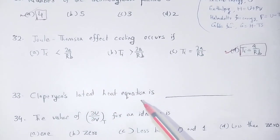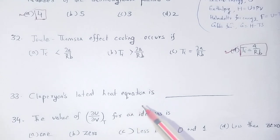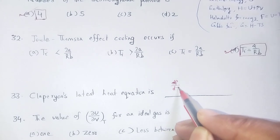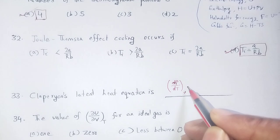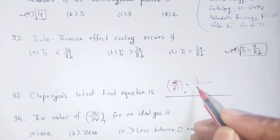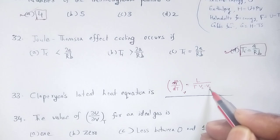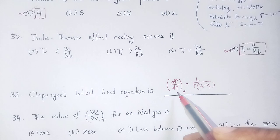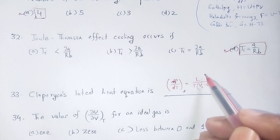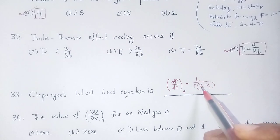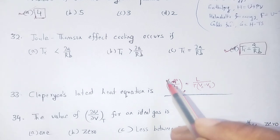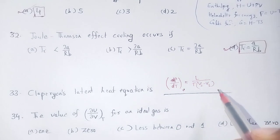Clausius-Clapeyron latent heat equation: dP/dT at constant volume is equal to L divided by T times (V2 minus V1), where L stands for latent heat, T is temperature, V2 is the final volume, and V1 is the initial volume. This is the Clausius-Clapeyron latent heat equation.